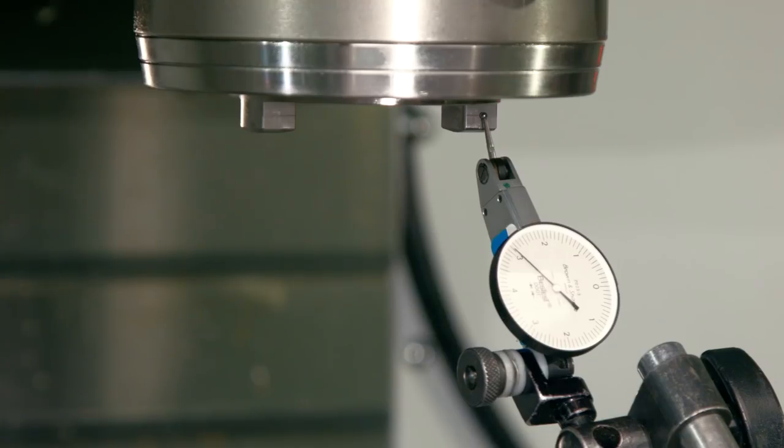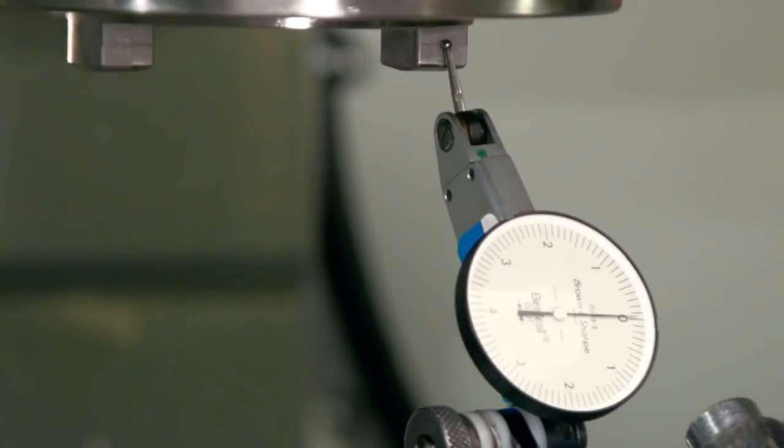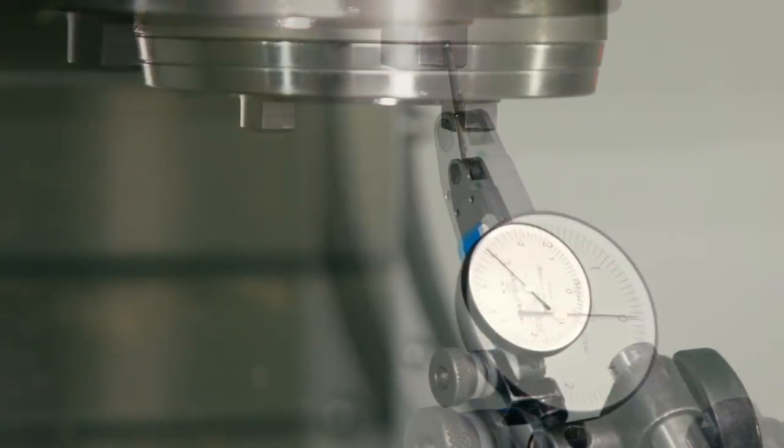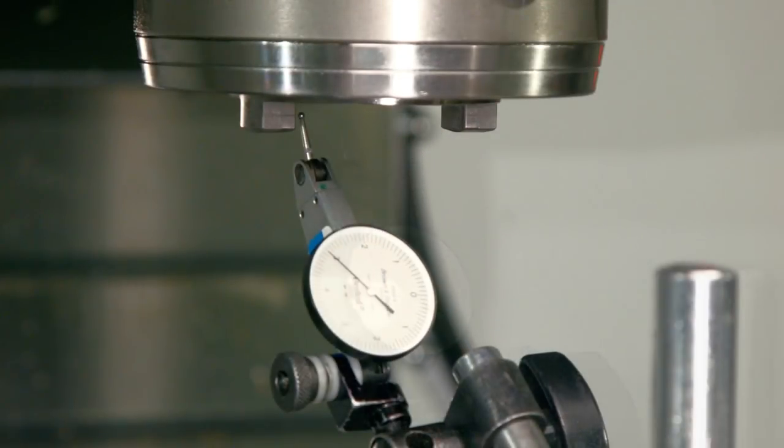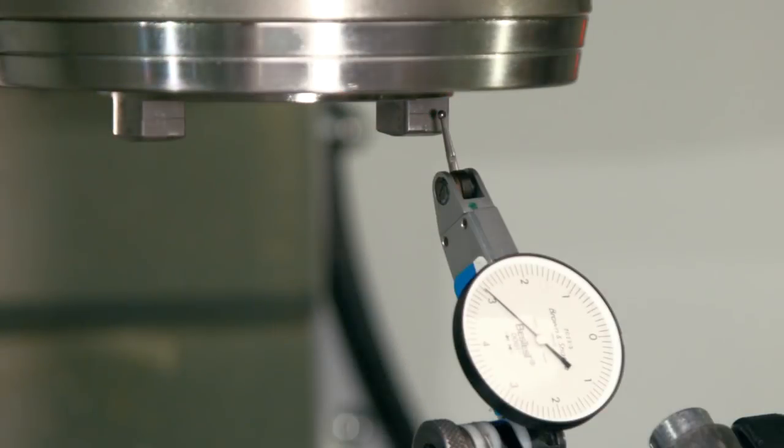Jog the indicator tip to one of the drive dogs and set it to zero. Then jog in the X direction to the second drive dog. It's not yet aligned so we need to make another change to parameter 257.